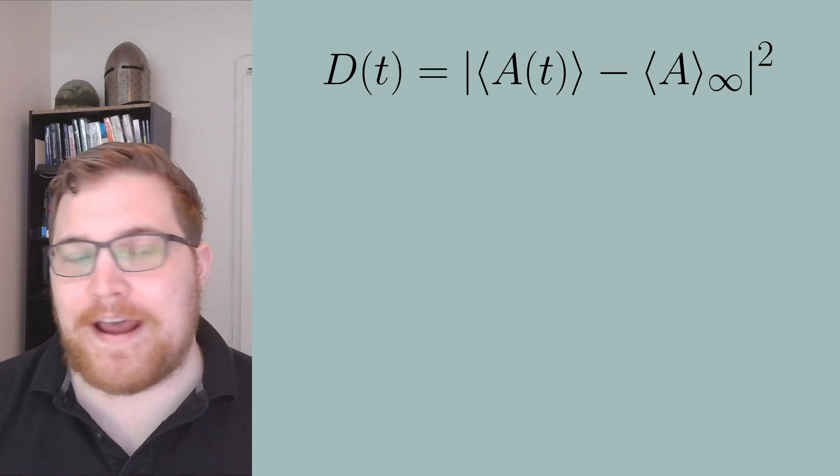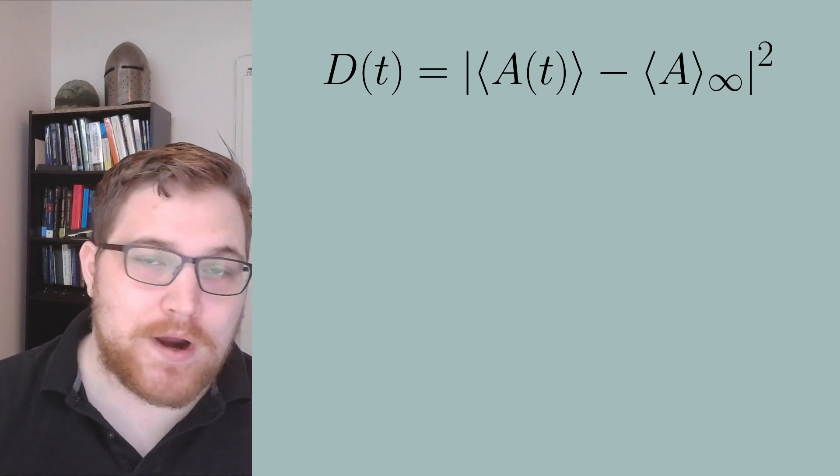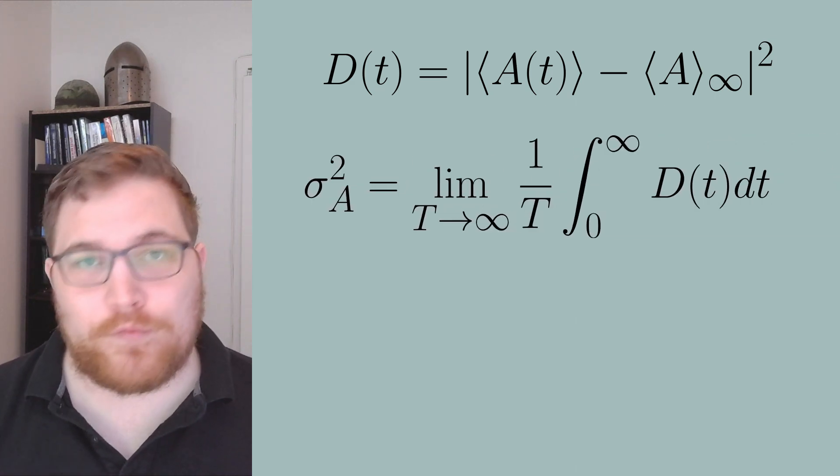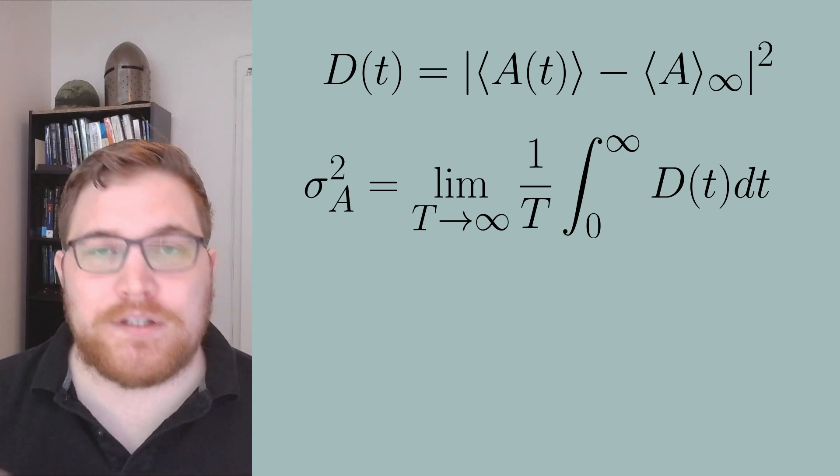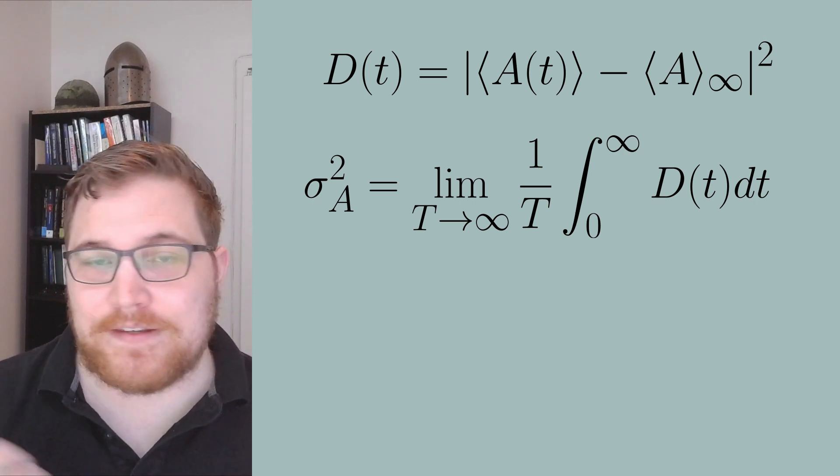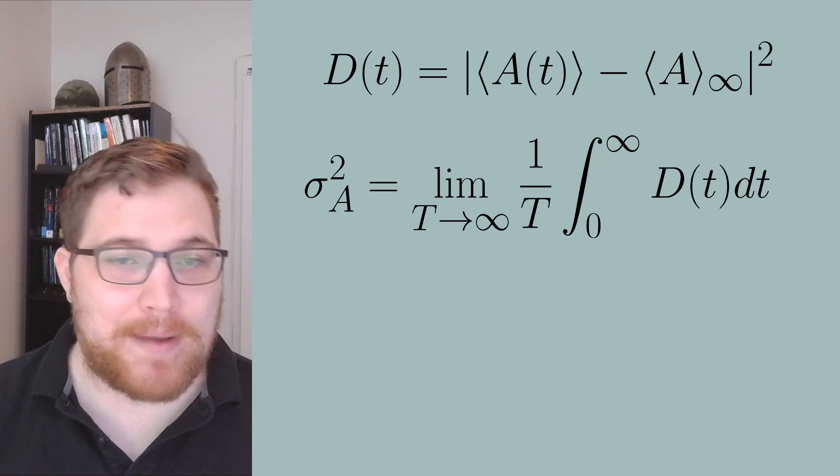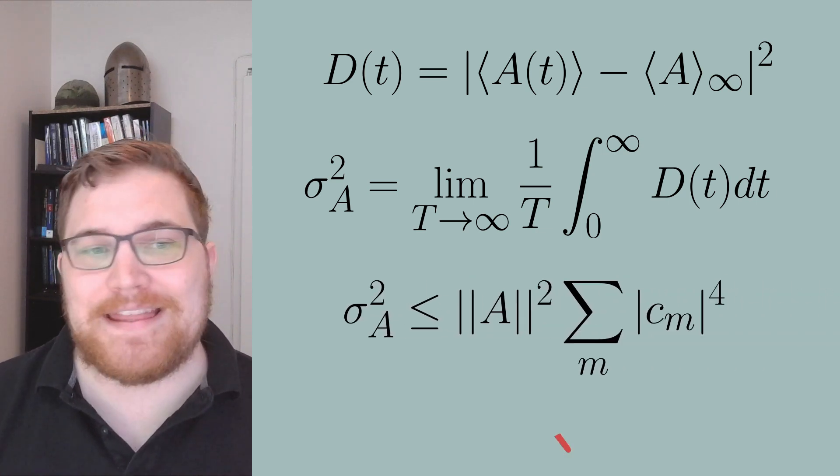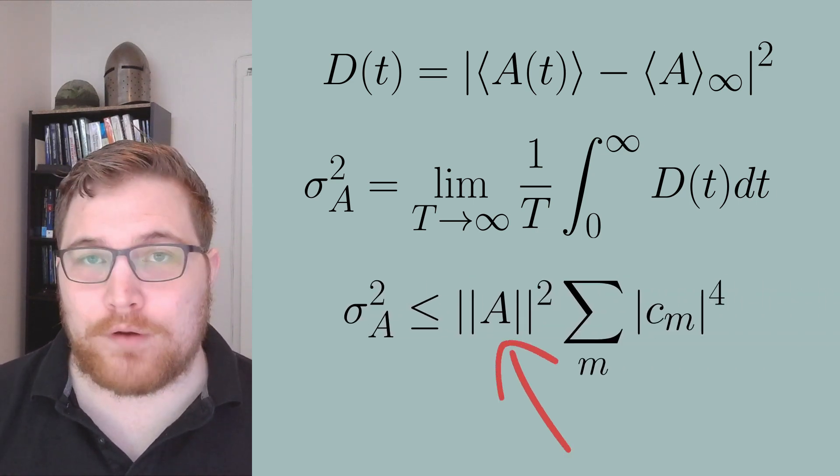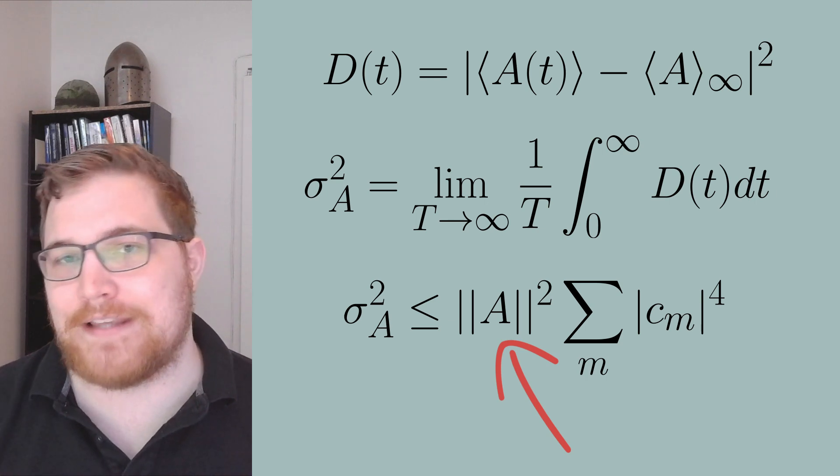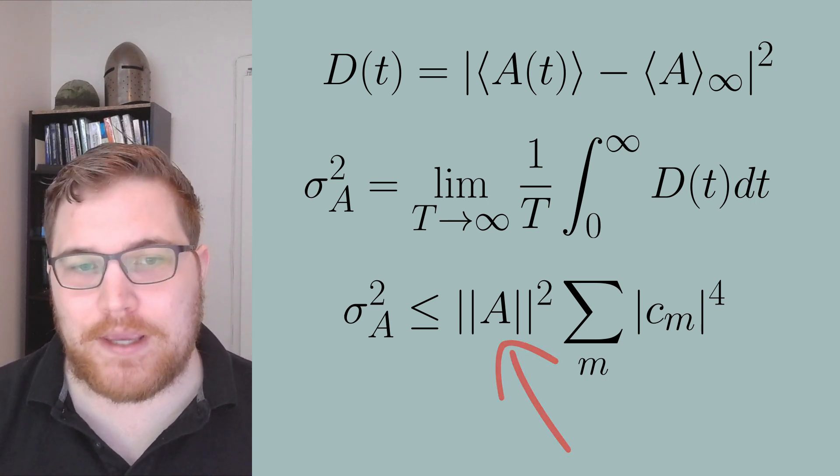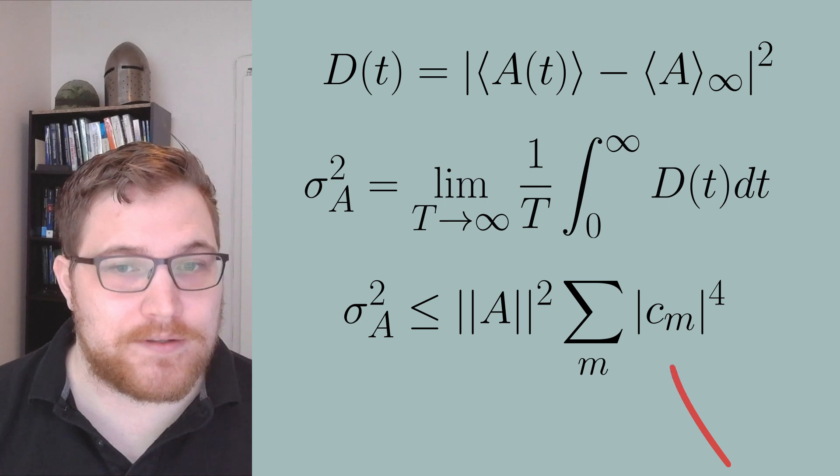We will call this average sigma squared with a subscript a for our observable a. So we are going to take the infinite time average of d of t, and this is given by the following expression. And it turns out that you can bound this expression from above by the following formula. The a in the operator norm notation should be understood as the largest singular value of a.